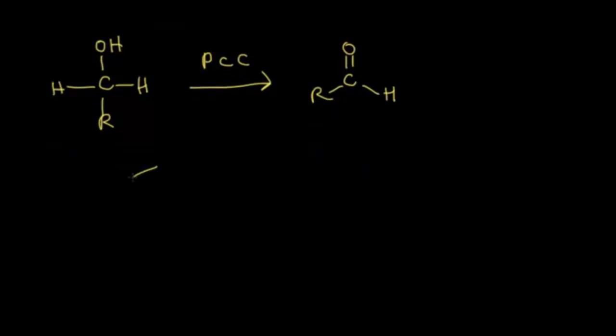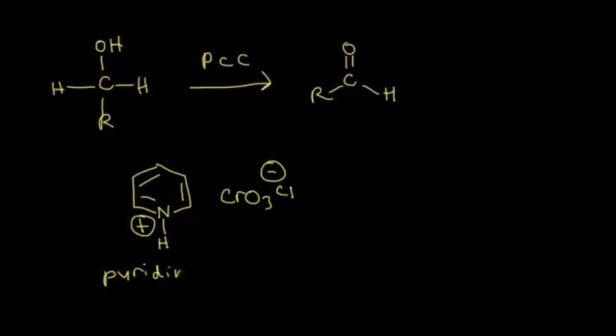Pyridinium is derived from pyridine. Pyridine as a base is going to pick up a proton to form a positive charge here. Then we have CrO3 and then Cl with a negative charge. This would be the pyridinium part, and then we have chlorochromate over here on the right. This is the PCC reagent, which is a much more mild agent than the Jones reagent. It will oxidize your primary alcohol and stop at your aldehyde.